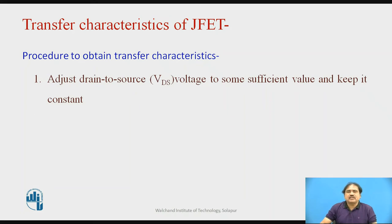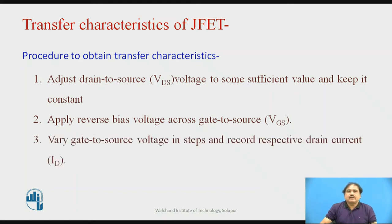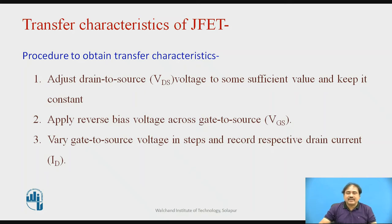The procedure is: first adjust the voltage from drain to source to some value and keep it constant, then apply a reverse-bias voltage between gate and source, then vary this voltage and note the corresponding drain current measured by the ammeter at the drain terminal.